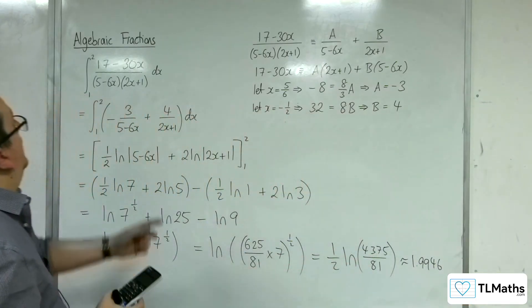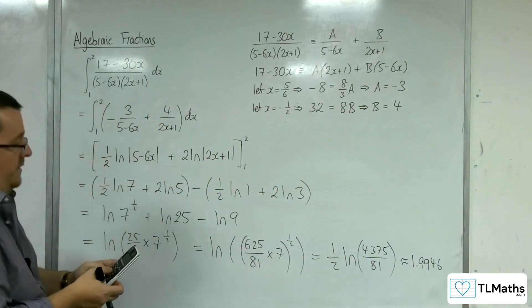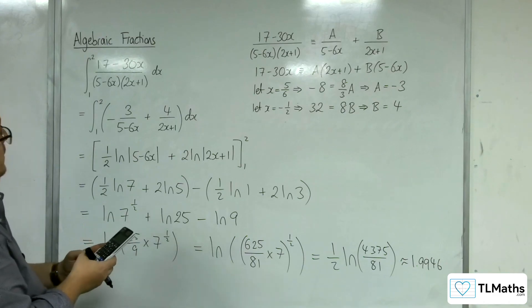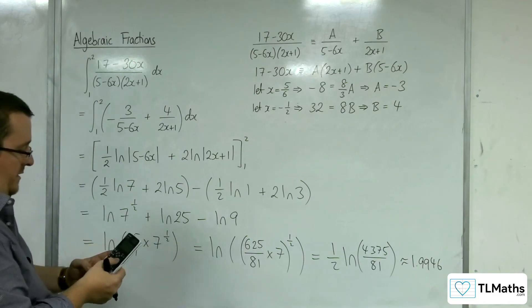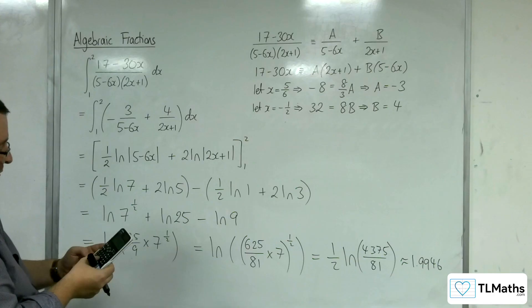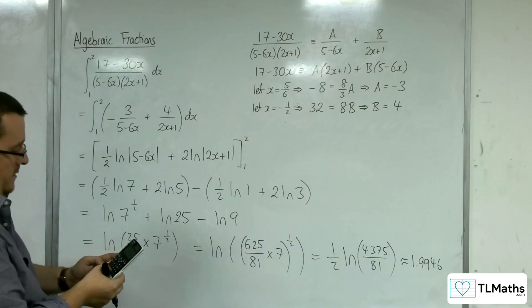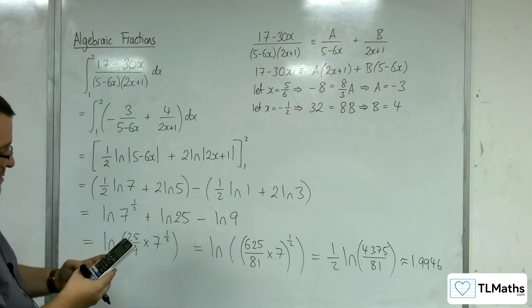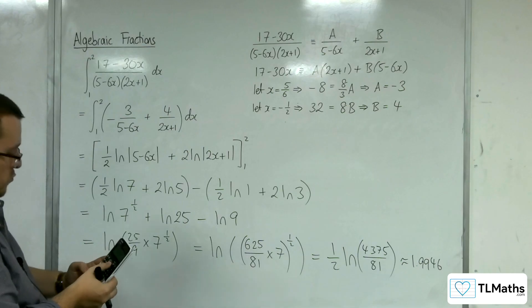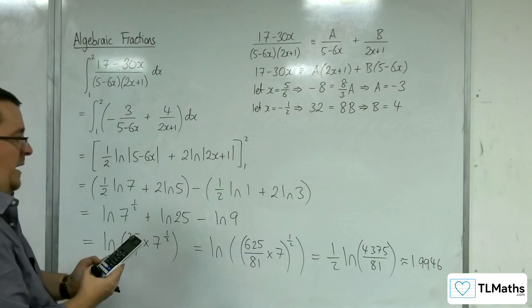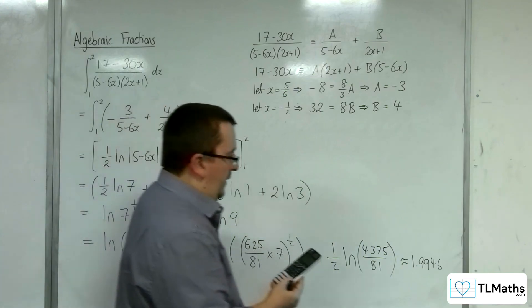Okay. So, now if I plug this into my calculator, I can check my result. So, 17 take away 30x over 5 take away 6x, 2x plus 1, evaluated between 1 and 2. And we get 1.9946.